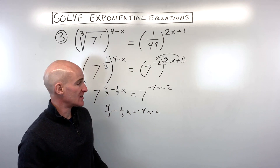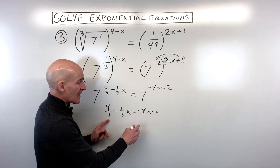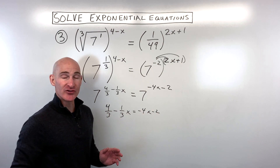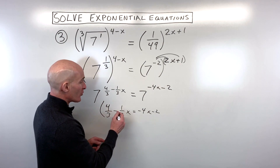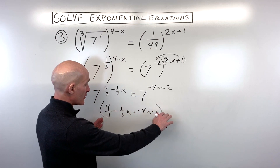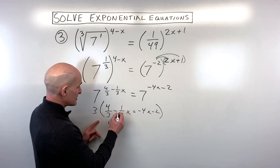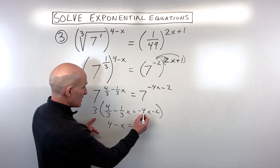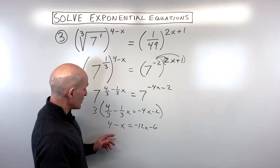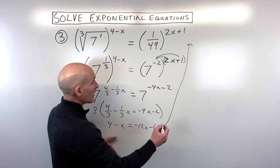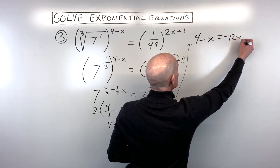Sometimes students have a challenge when they see fractions. A technique for clearing the fractions is to multiply both sides by the common denominator — in this case three. Doing that gives us four minus x equals negative twelve x minus six. That's a bit easier to work with. So we've got four minus x equals negative twelve x minus six.